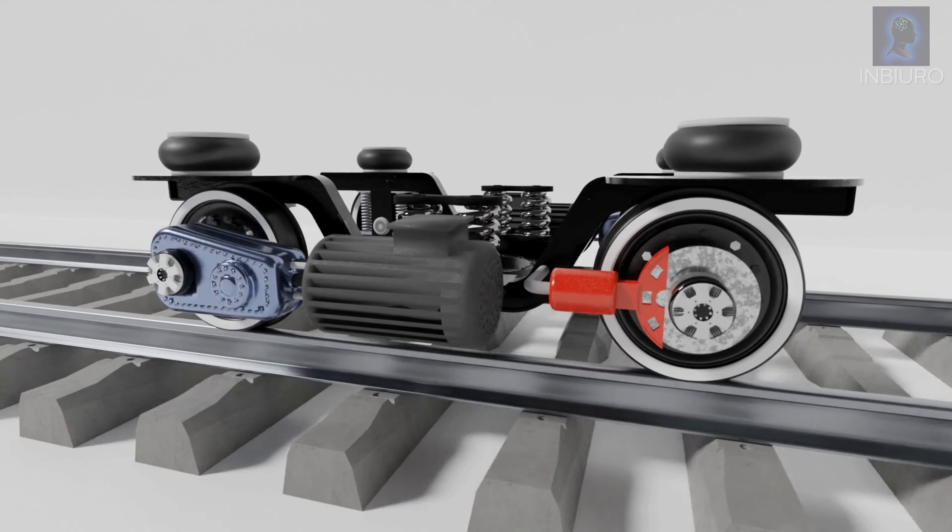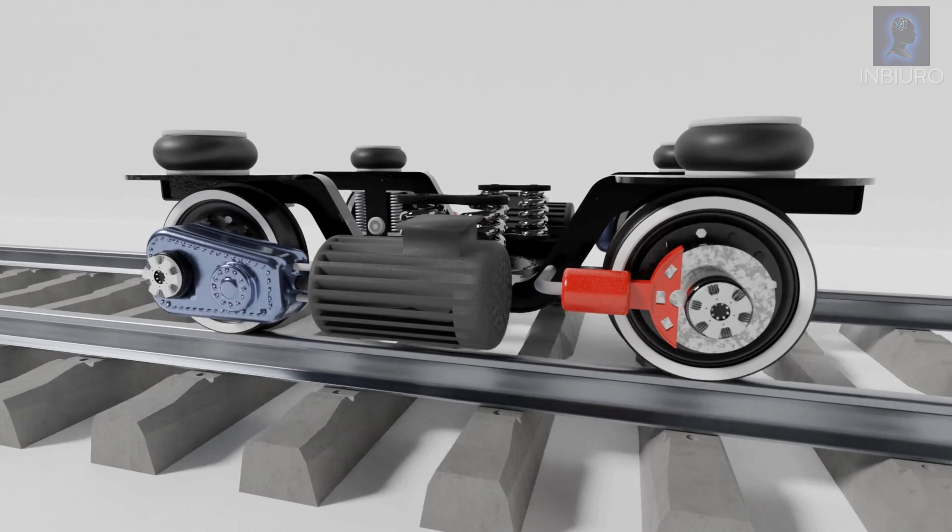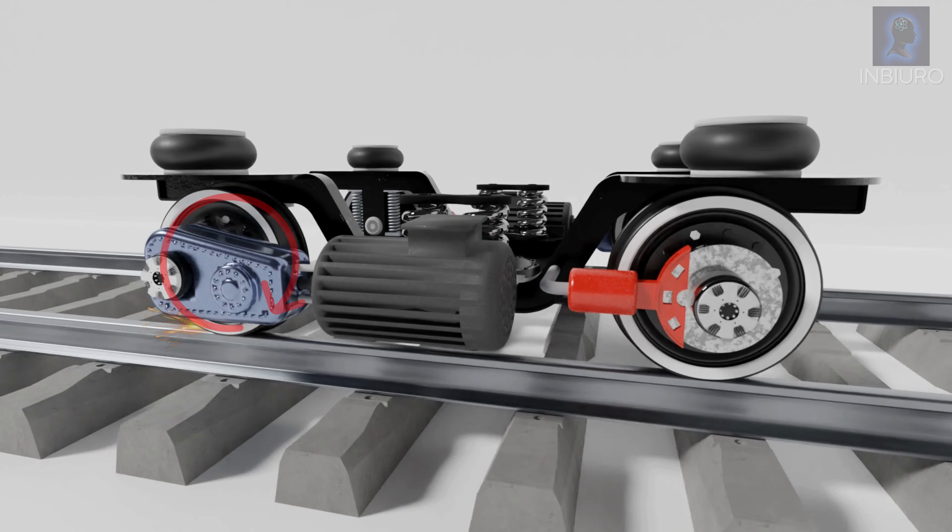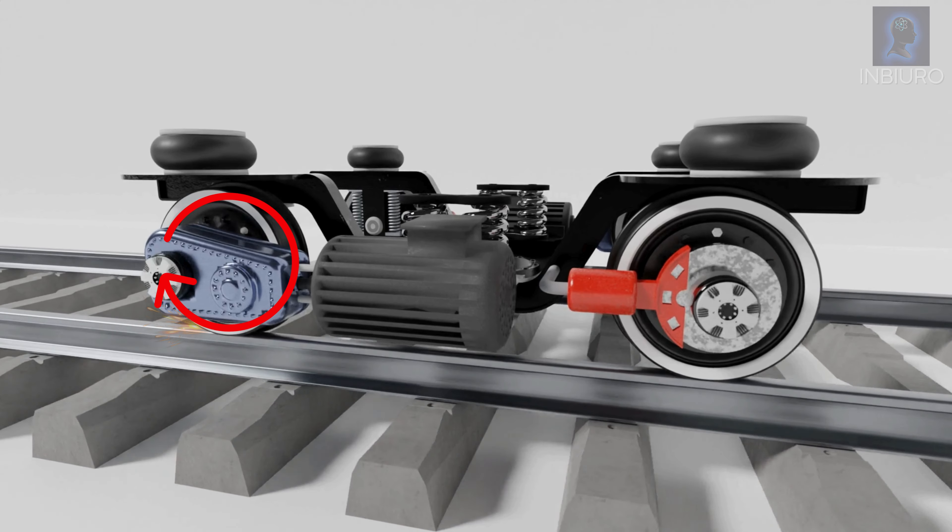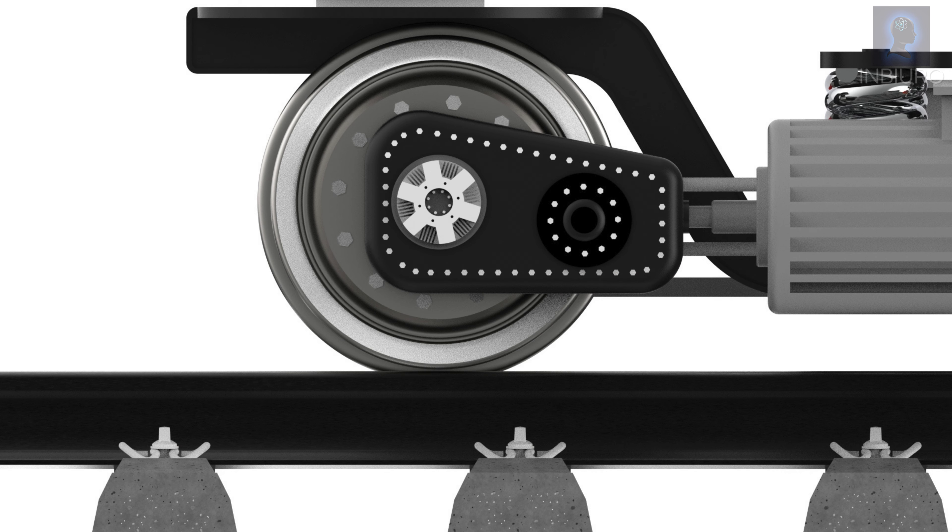When the driving moment is too high, or the contact load is too low, the driving wheel starts skidding, and driving power is not utilized efficiently. Let's have a close look at the contact face between the wheel and the rail.